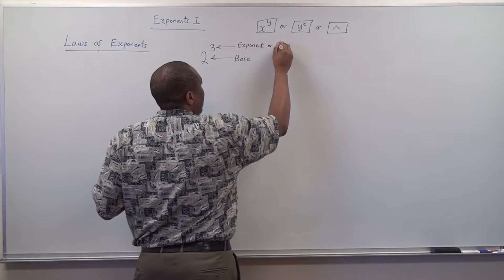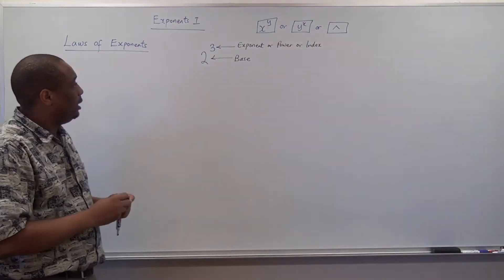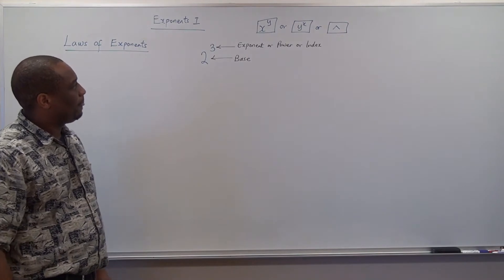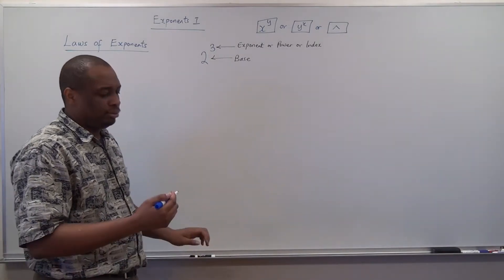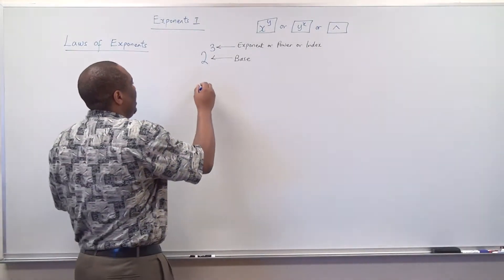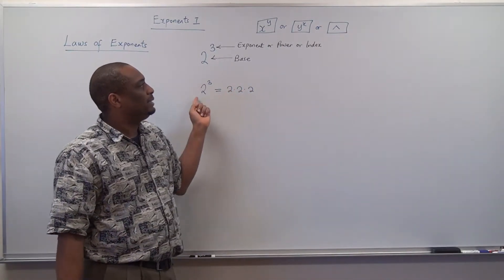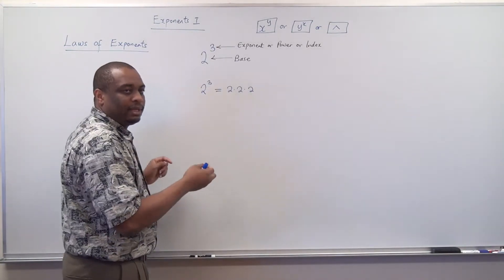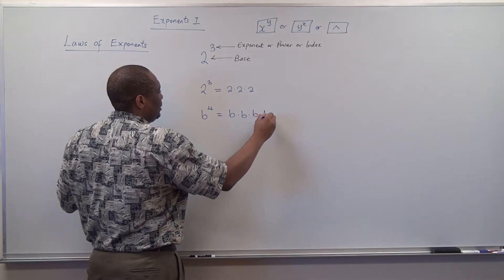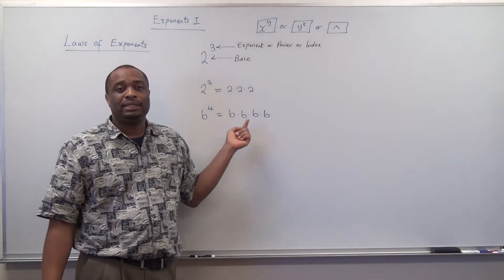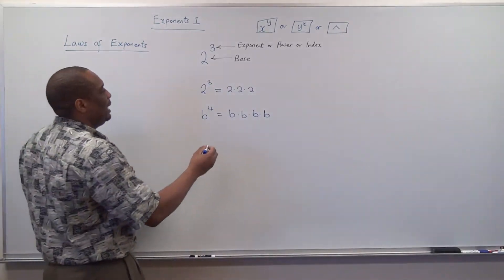Some people will say it's the power or index. So, exponent or power or index is what we call the top one, and this one is called the base. The exponent tells you how many times to multiply the base. Like, when you have 2 raised to power 3, this means 2 times 2 times 2 — you have multiplied the base 3 times. The same thing if you have b raised to power 4: it means b times b times b times b, so you have multiplied the base 4 times. Here, b is the base and 4 is the exponent.